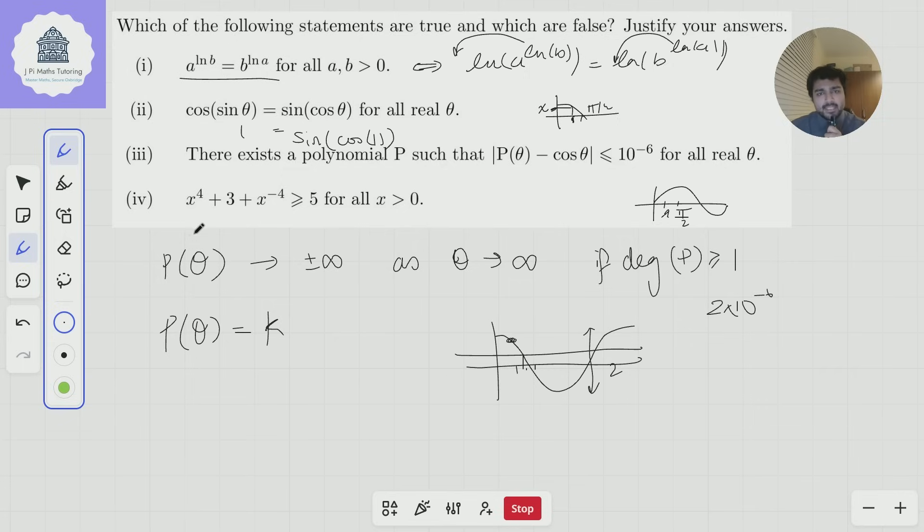Let's look at the last part. So is x^4 + 3 + x^(-4) at least 5 for all positive values of x? The answer to this is yes.